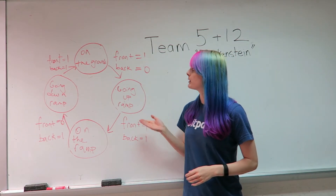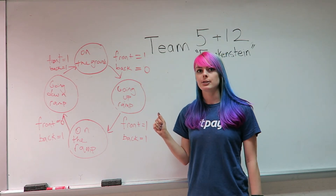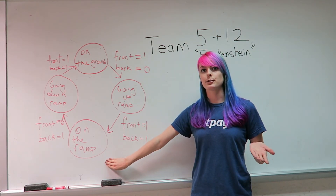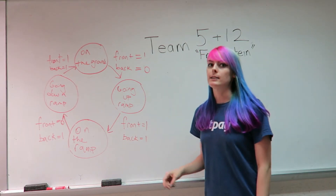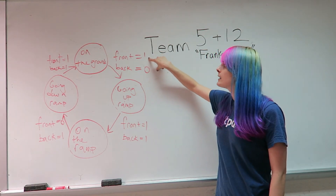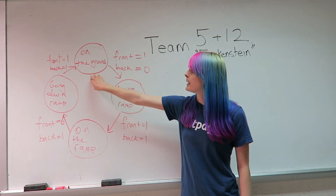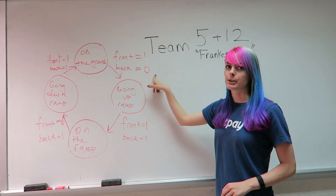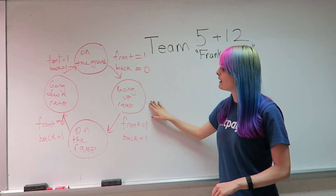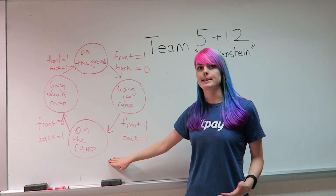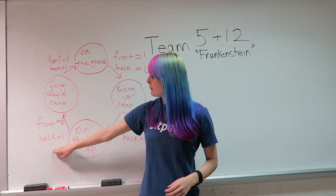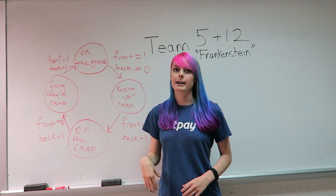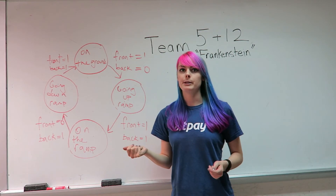If we had more time, we would have implemented a state machine to determine when we were on top of a ramp and send a message to the supervisory system displaying that we're on a ramp. We would start in an on-the-ground state with both tilt switches reading one. When the back sensor goes to zero, we'd know we were going up the ramp. When it returns to one, we'd be on top and send the message. When the front tilt switch triggers, we'd be going down, and when both read one again, we'd be back on the ground. Unfortunately, we didn't have enough time to implement this.